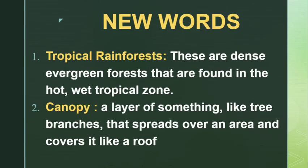Now let's have a look at new words. Tropical rainforest — these are dense evergreen forests that are found in the hot, wet tropical zone. Canopy — a layer of something like tree branches that spreads over an area and covers it like a roof.